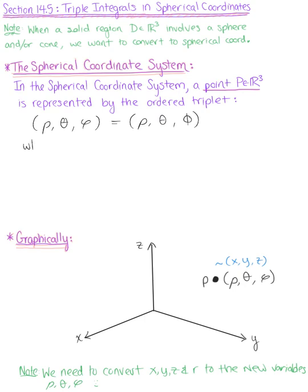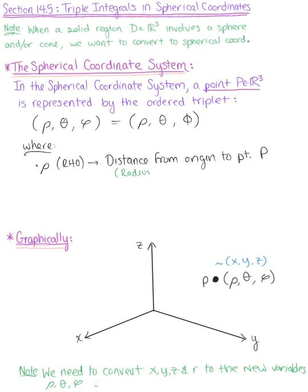Rho is the distance from the origin to point P. We can think about this as the radius of the sphere. Graphically, you can see it is the distance from the origin to point P — this is rho.